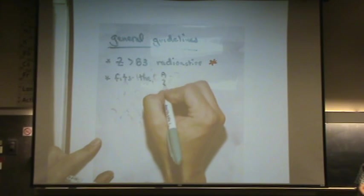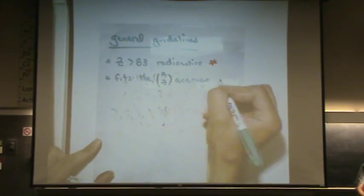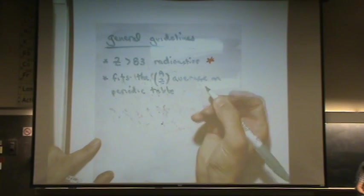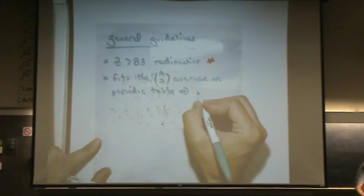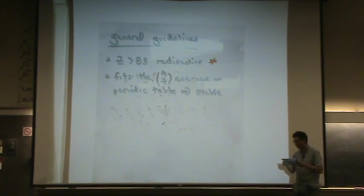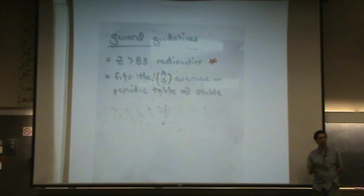Here's the next one. So if it fits the average on a periodic table, on the periodic table, then it's stable. Let me tell you what I mean by that and then say a little bit more about it. So for example, if you have your periodic table handy, take a look at sulfur. Sulfur, let's say you didn't know anything else about sulfur. Its atomic number is 16. Its mass number is 32. So you would expect sulfur-32 to be a stable element. Does that make sense? Because it fits what it says on the periodic table of the averages.